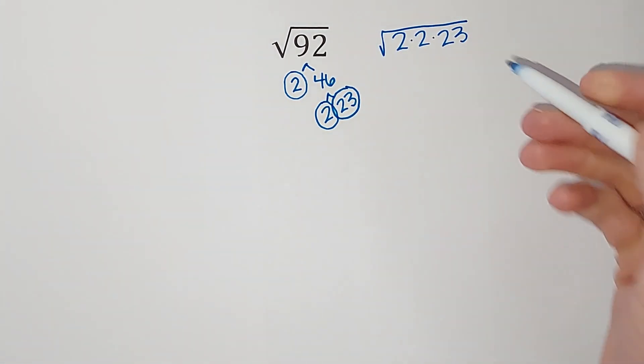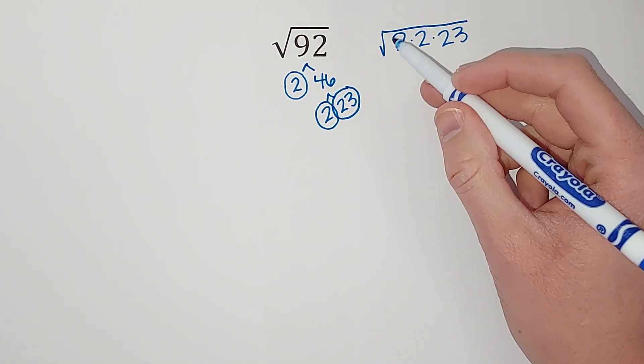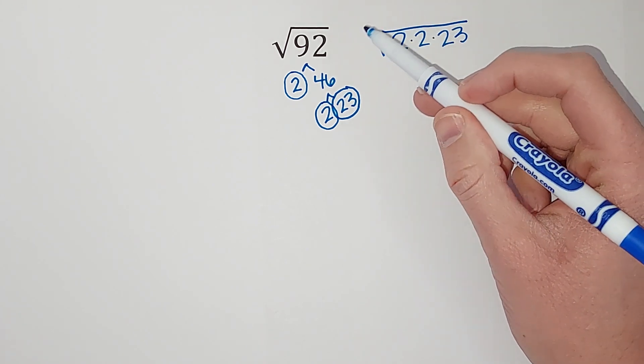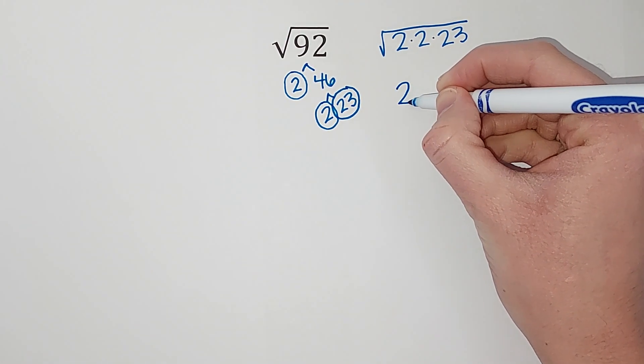I have two twos being multiplied by each other, so a two being multiplied by itself, which means I can pull one of those twos out. So I'll have on the outside of the radical a 2, under the radical that 23 stays there.